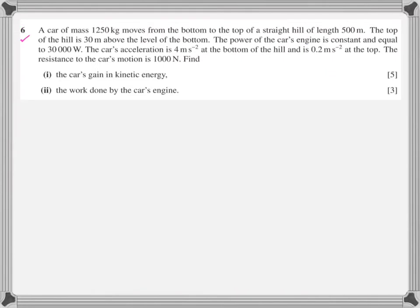Let's move to question number six. A car of mass 1250 kg moves from the bottom to the top of a straight hill of length 500 meters. The top of the hill is 30 meters from the level of the bottom. The power of the car's engine is constant, equal to 30,000 watts - it could also have been written as 30 kilowatts. Car acceleration is 4 m/s² at the bottom, 0.2 m/s² at the top. Resistance is 1000 newtons. Find the car's gain in kinetic energy and the work done by the car's engine. The examiners at CAIE are pretty creative - don't expect the same old traditional style of question each time.